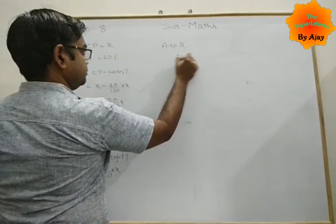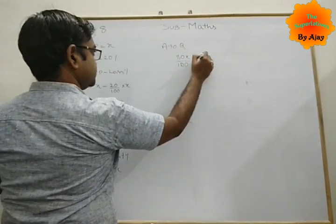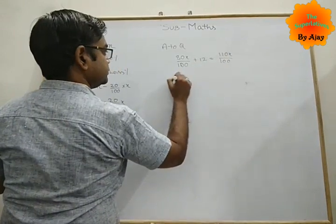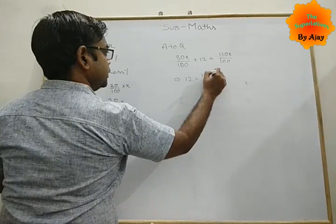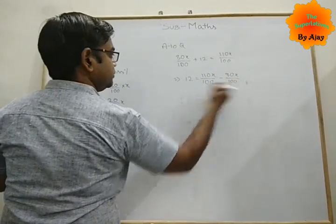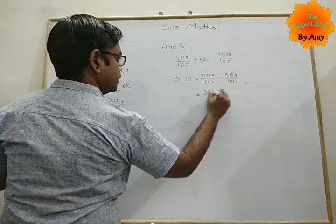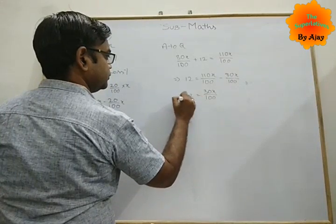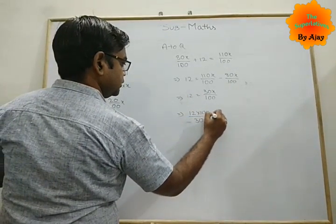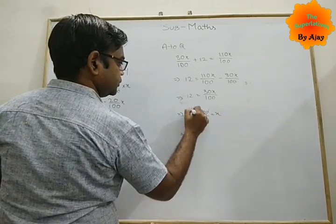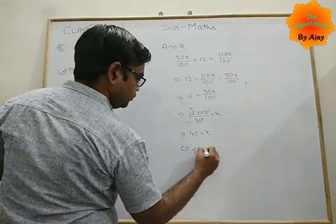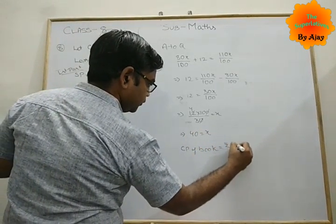Now the question says that if he sold 12 more, then he would have gained 10%. In the second part, there is a gain percent or profit percent of 10%. So selling price equals CP plus profit percent. It's x plus 10 upon 100 into x. It's 110x upon 100. The condition says that 80x upon 100 plus 12 equals 110x upon 100. Simplify, then 12 equals 30x by 100. Then 12 into 100 by 30 equals x. It's 40 equals x. The CP of the book equals Rs. 40.